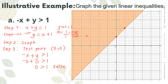Here is our shaded region. As you can see, the line is an unbound or dashed line because the original inequality — negative x plus y greater than 1 — does not include the boundary line in its solution.